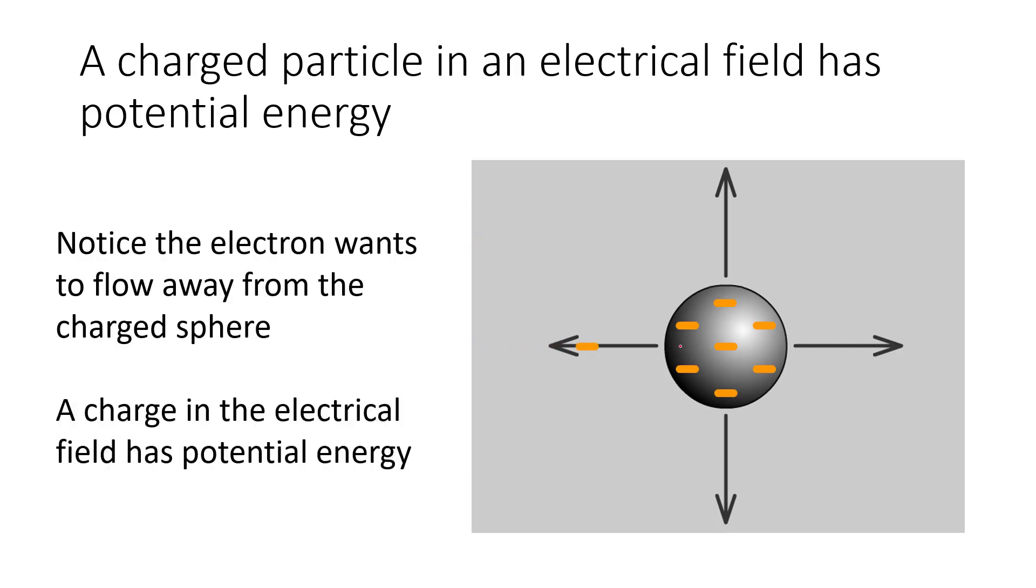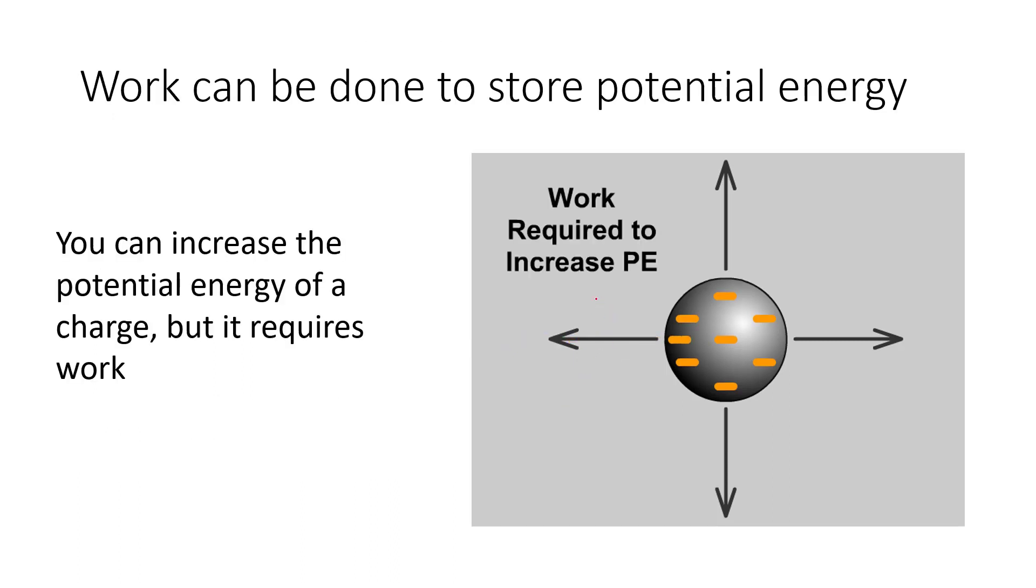The electron is going to want to move away from a charged sphere if it's right there, and so that's going to be the potential energy that will be stored. We'll do some calculations later on with the math. That electron has potential energy to go away. A proton would have potential energy to go towards that sphere. We can charge up the sphere more.